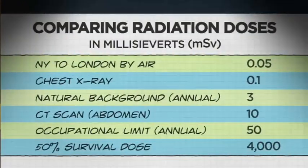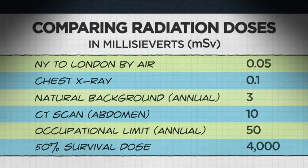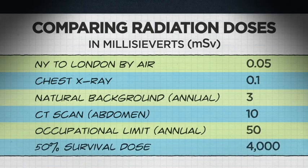Regarding potential health effects of radiation, remember it's all about dose, which needs to be evaluated in context. On this chart, you will see typical doses from common exposures — including air travel, chest X-ray, or CT scan — compared to what we get from natural background radiation annually. The 50% survival dose — the dose that gives a 50% chance of surviving radiation sickness — is 4,000 millisieverts, equivalent to 400 CT scans back-to-back or 1,300 years of natural background radiation in one sitting.